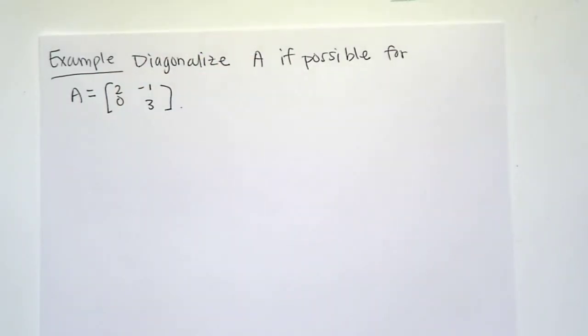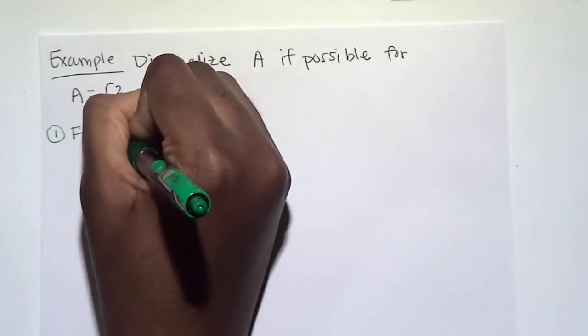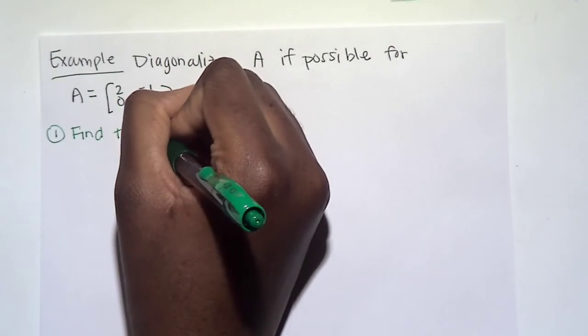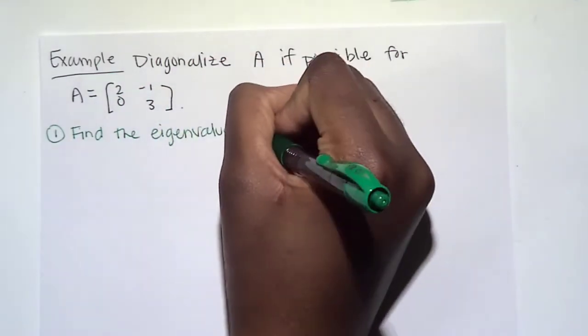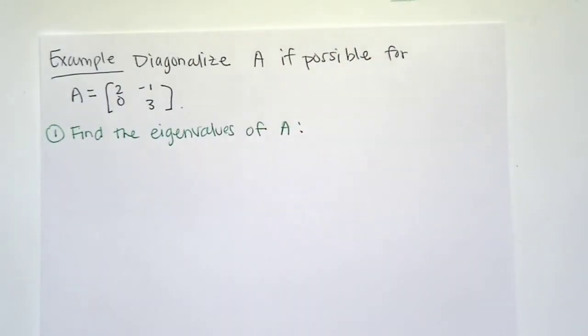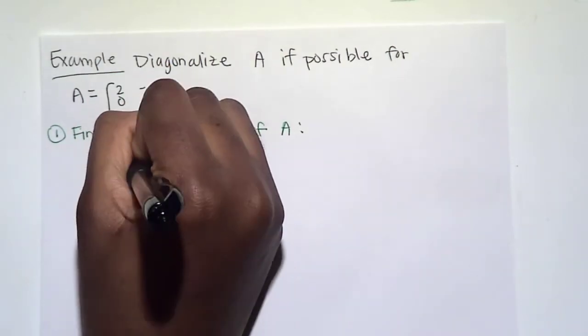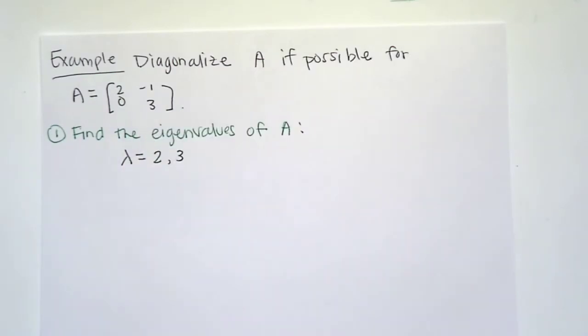All right, so here is the first step. Number one, we need to find the eigenvalues of A. Luckily, our matrix is triangular, so it's quick and easy to see that our eigenvalues are 2 and 3.